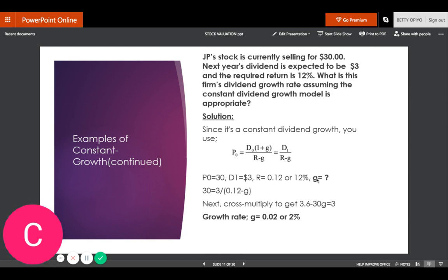When we plug in the numbers into the equation: P0 = 30 equals D1 divided by (R - g). So 30 = 3 / (0.12 - g), which is the same as the equation we have for our constant growth model. Then we just do cross multiplication.